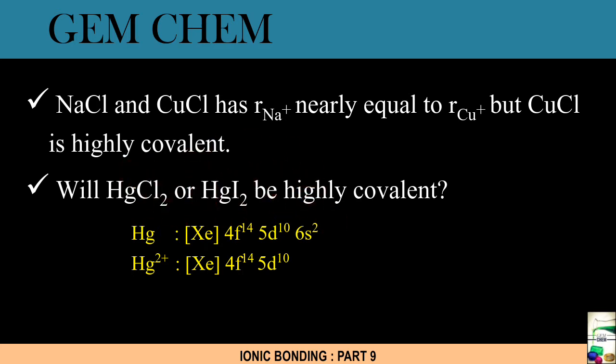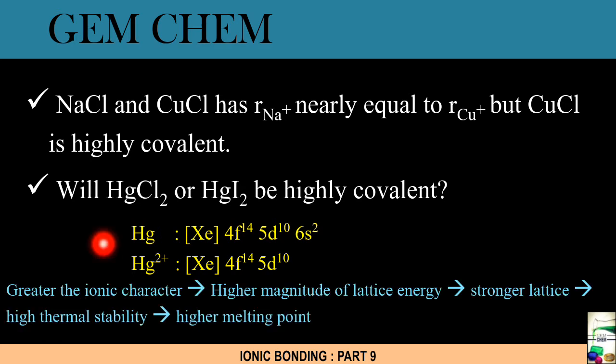Now another point to remember is that greater the ionic character, higher will be the magnitude of lattice energy and stronger will be the lattice. Therefore they will have high thermal stability as well as higher melting point.